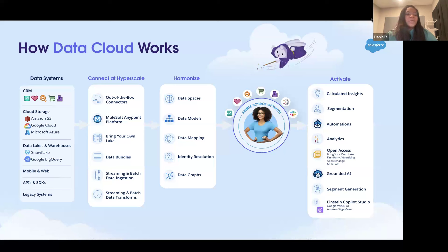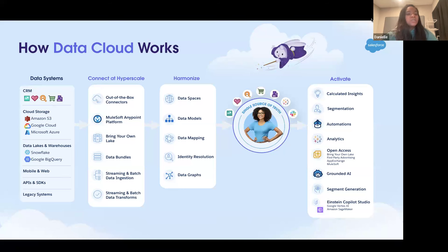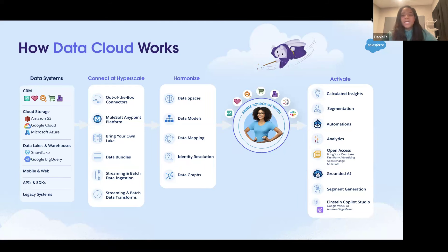For example, you might be storing data in Salesforce CRM, Marketing Cloud, Commerce Cloud, and you might even have some files stored in Amazon S3, Google Cloud Storage, or Azure. Data Cloud has out-of-the-box connectors to a lot of these systems — like CRM, Marketing Cloud, and Commerce Cloud — to allow you to ingest data into Data Cloud.